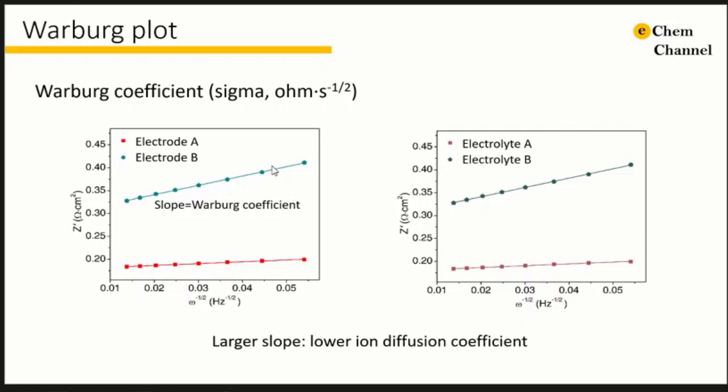If you plot the curve for different materials and electrolytes together, you can directly compare their ion diffusivity. With a larger slope, the diffusivity should be lower.